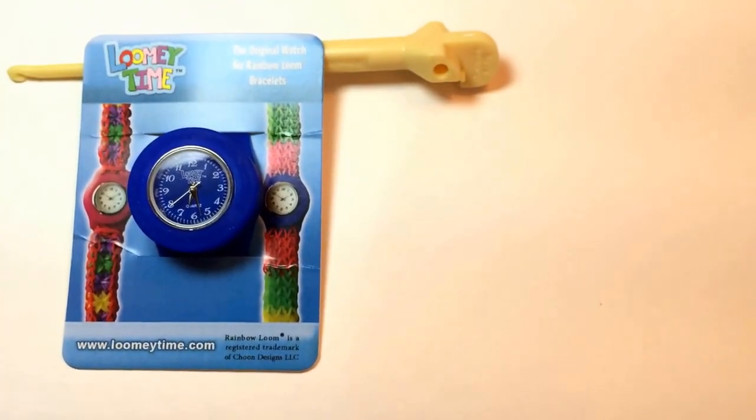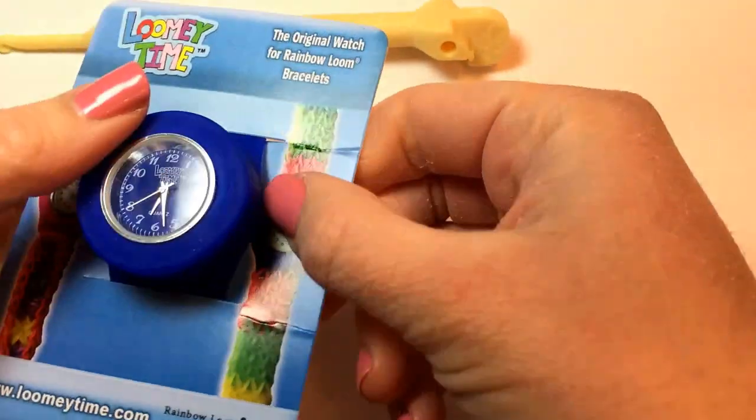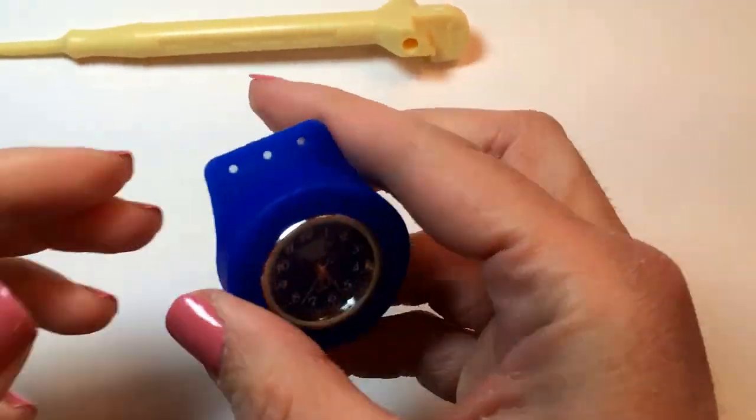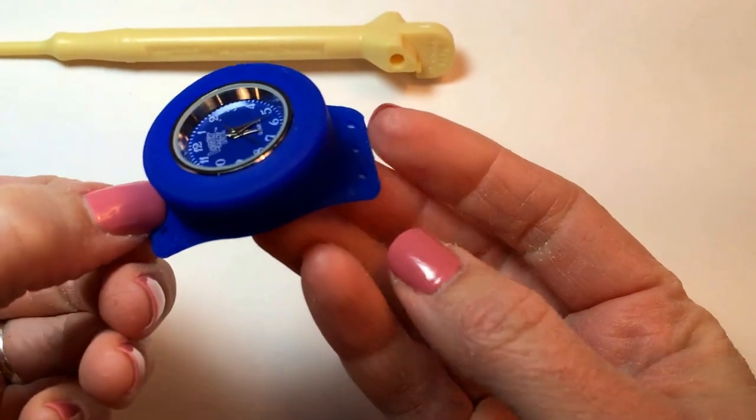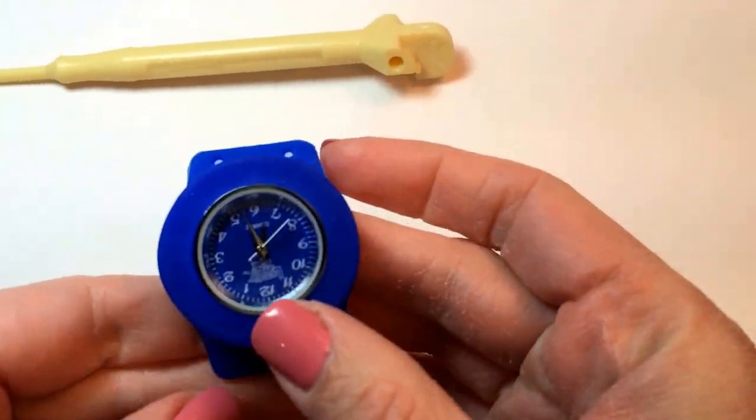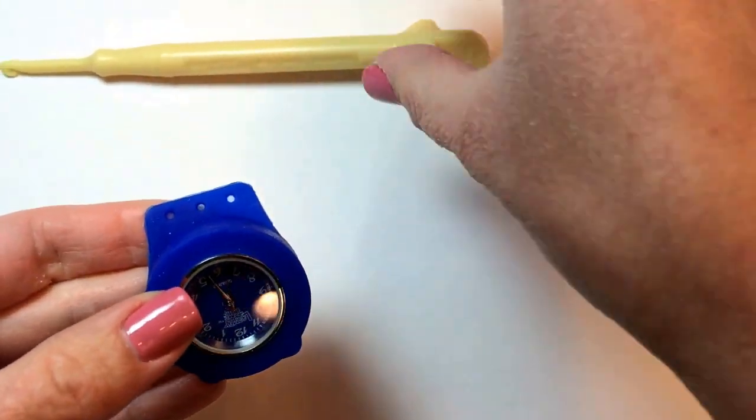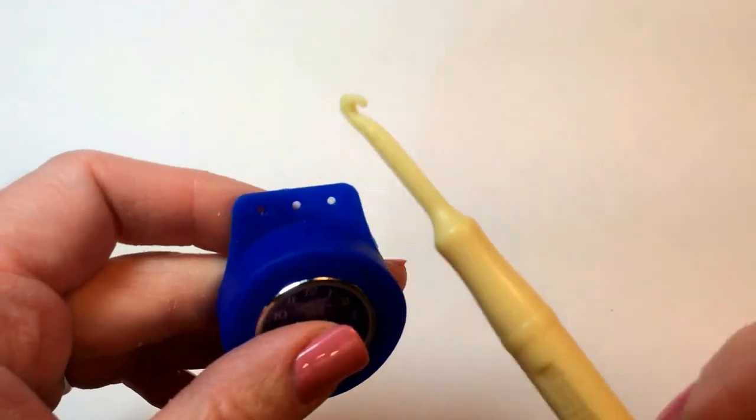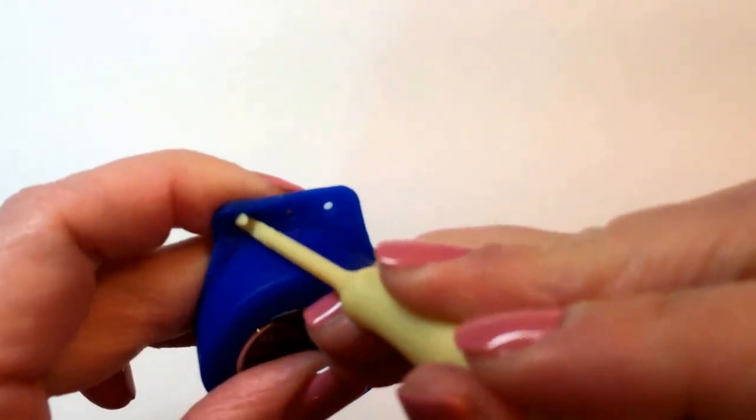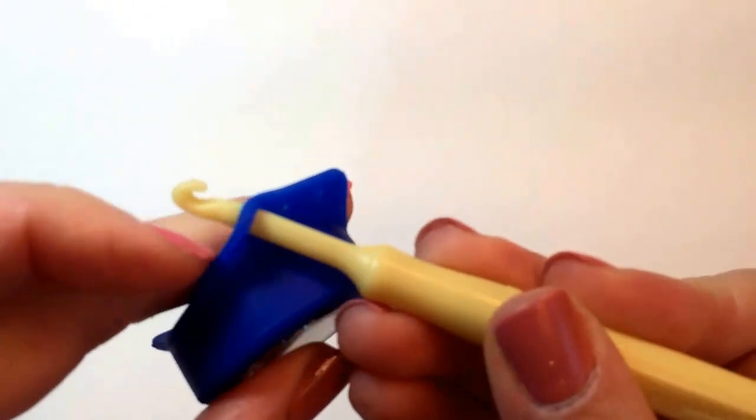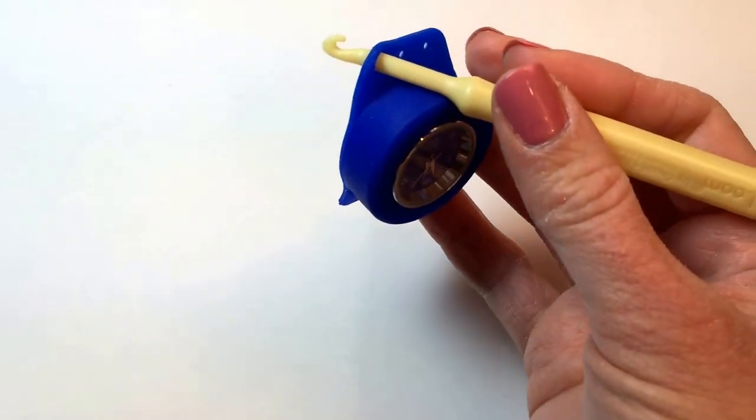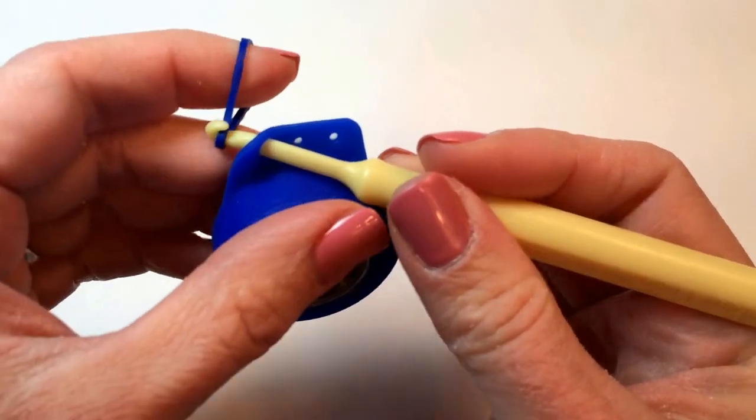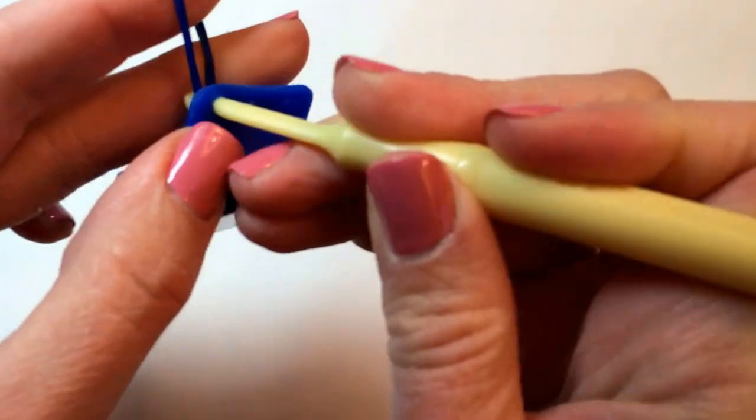So you'll get it in the package like this. It comes in a plastic case. You pop it out and you'll see that there's holes on each side for rubber bands. And this Lumi Time Watch is really easy to work with. Your hook fits right in these stretchy holes. So you can then take the rubber band that you want to have as the outer color on your bracelet band. Hook it on.